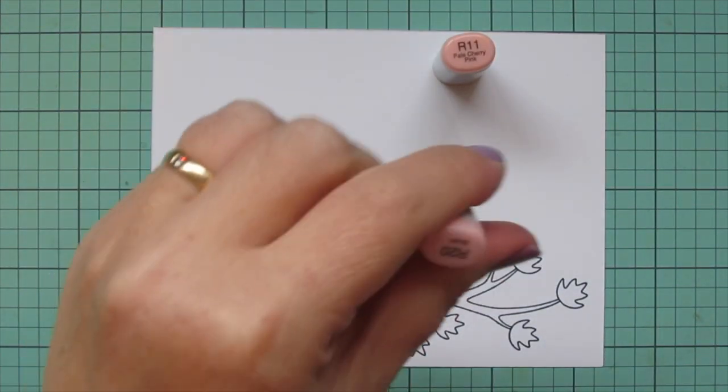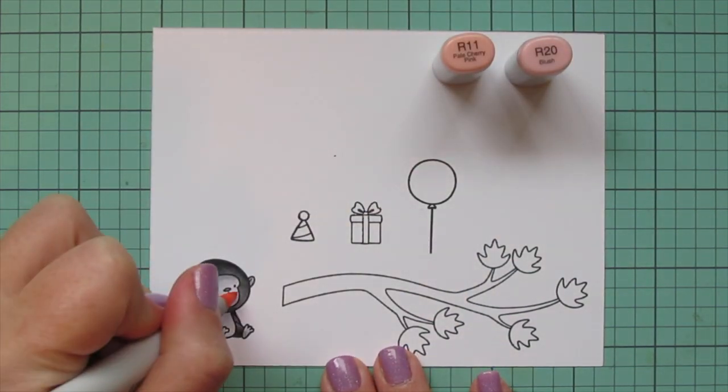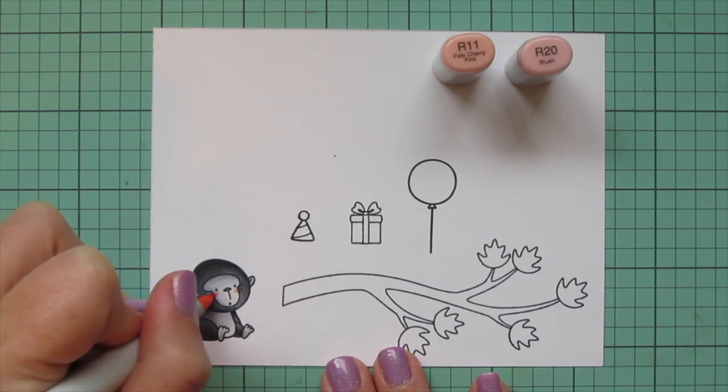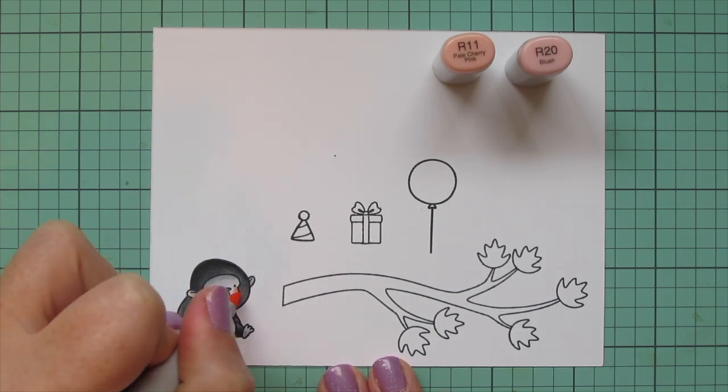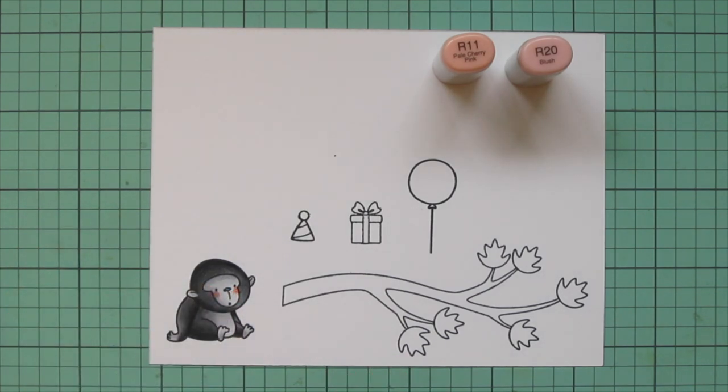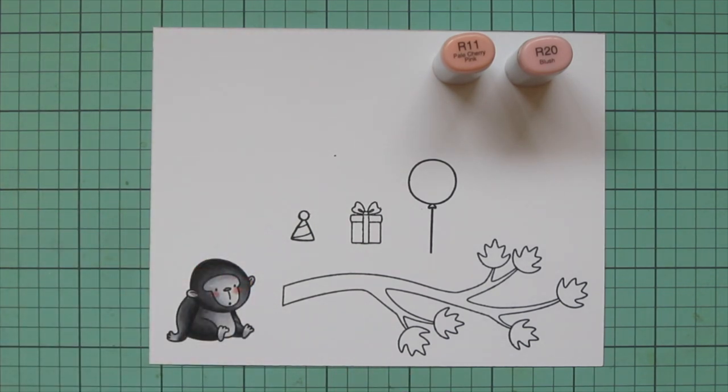I wanted to give him some rosy cheeks so I'm going to use R11 and R20 for that. And I'm coloring over kind of the line around his face and continuing that blush over the edge there and then blending that out with the R11. I also added just a touch of the R11 on the insides of his ears.